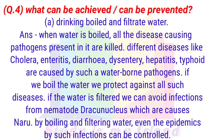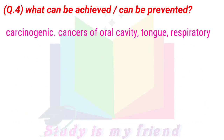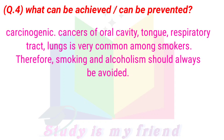When epidemics from such infectious diseases can be controlled. B. Avoid smoking and alcoholism. Answer: Smoking and alcoholism are two dangerous habits. Alcoholism causes disorders of the liver. The addict suffers from malnourishment; his mental and physical conditions become abnormal. There are social and familial impacts due to alcoholism. Smoking is an invitation for cancer; cigarettes and BDs contain hazardous nicotine which is not only toxic but also carcinogenic. Cancers of oral cavity, tongue, respiratory tract, and lungs are very common among smokers. Therefore, smoking and alcoholism should always be avoided.